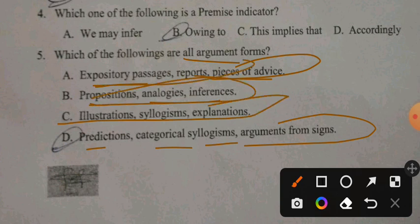C. Illustrations, syllogisms, explanations. D. Predictions, categorical syllogisms, arguments from signs. The answer is D.